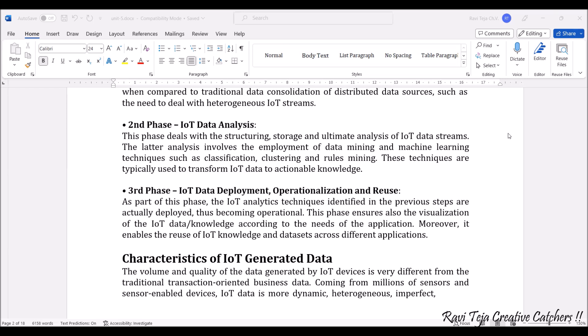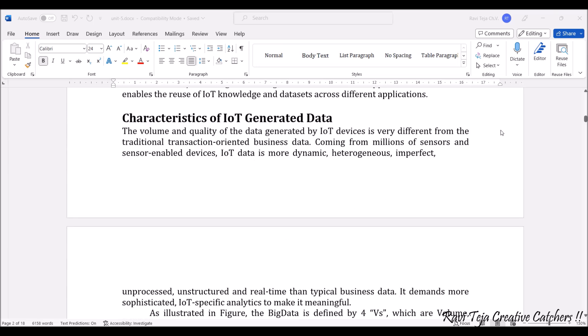Coming to the characteristics of IoT generated data: the volume and quality of data generated by IoT devices is somewhat different from normal traditional business data. There will be integration of several different types of sensors, and all IoT devices will be sensor-enabled devices. IoT data is more dynamic, heterogeneous, imperfect, unprocessed, unstructured, and real-time than typical business data. Because of all these things, it demands more sophisticated IoT analytics to make it meaningful.